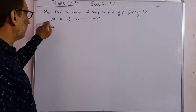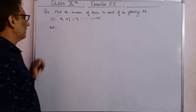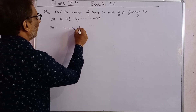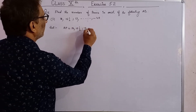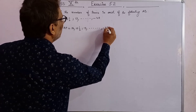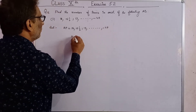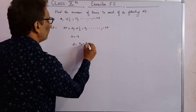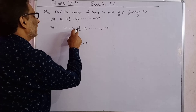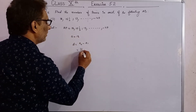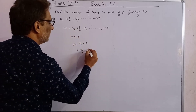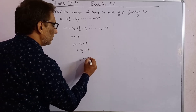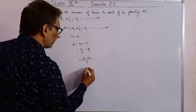Question 5, second part: AP is 18, 15.5, 13 and the last term is minus 47. Here a equals 18, d equals a2 minus a1, which is 31/2 minus 18, giving d equals minus 5 upon 2.